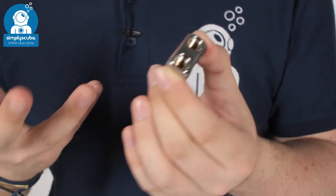As I said, if you're running short on low-pressure ports on your first stage. That's the XS Scuba low-pressure hose splitter.